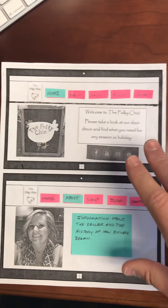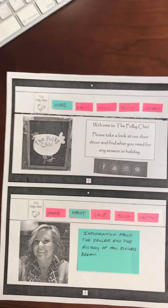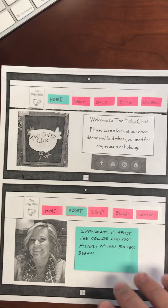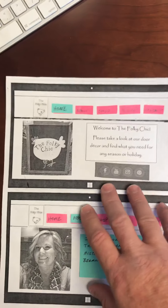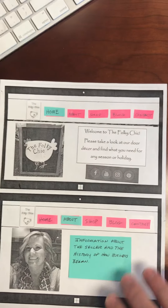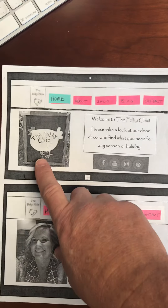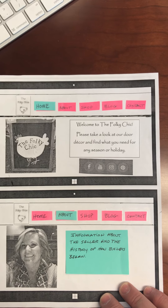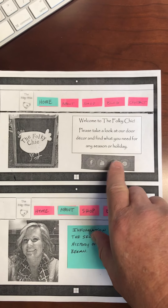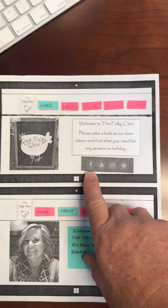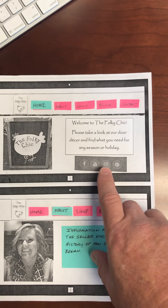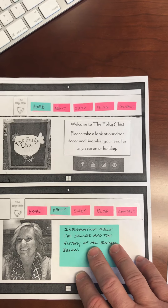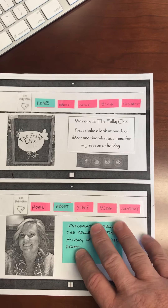Let's get started and go through the website. The first thing you'll see here is the homepage. You would click on the homepage and see some information about the seller, including a picture and a welcome message. There would also be some links at the bottom for their Facebook, YouTube, Instagram, or Pinterest sites that would link you to the associated pages for the Folky Chick.